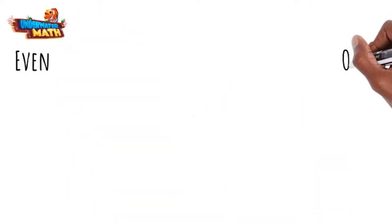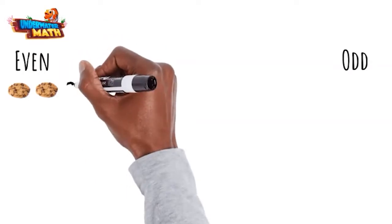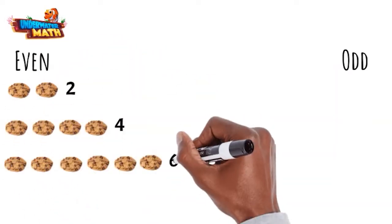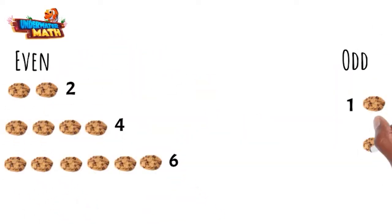How can we tell if a number is even or odd? Well, even numbers are numbers like 2, 4, and 6. Odd numbers are numbers like 1, 3, and 5.